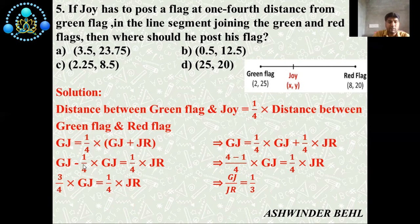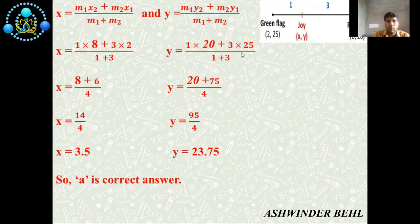Now we will solve this equation. GJ - 1/4 × GJ = 1/4 × JR. Simplifying, 3/4 × GJ = 1/4 × JR. At the end, GJ/JR = 1/3. So now we get the ratio, which is 1:3.